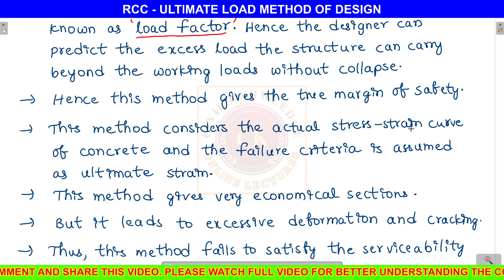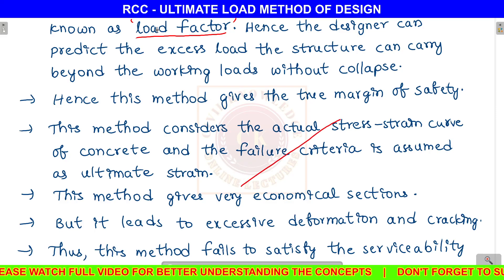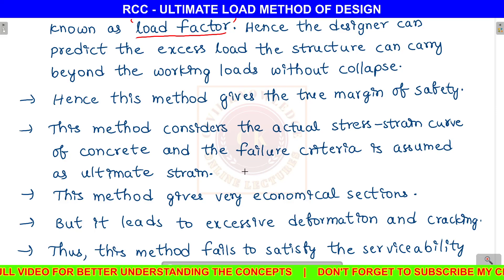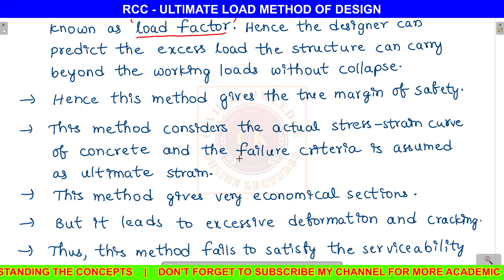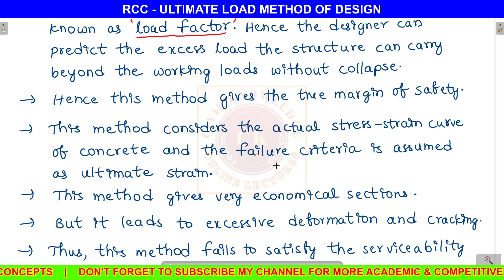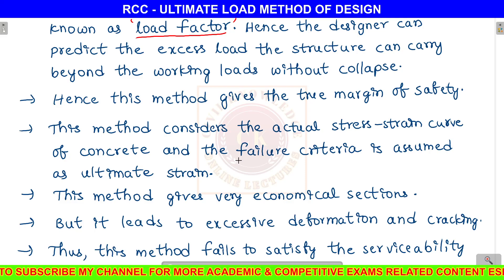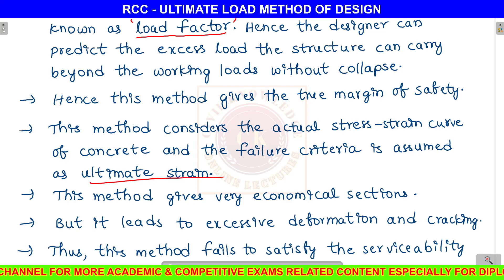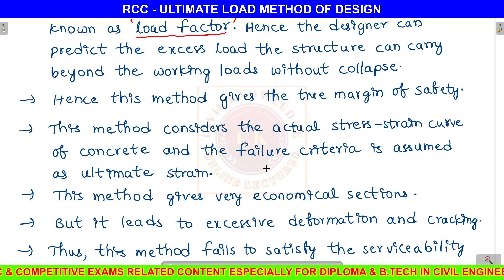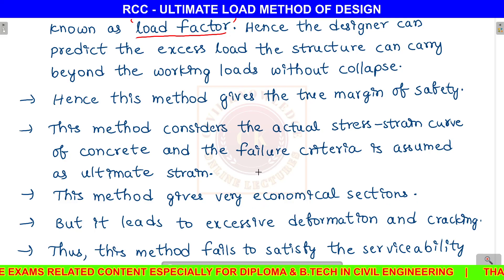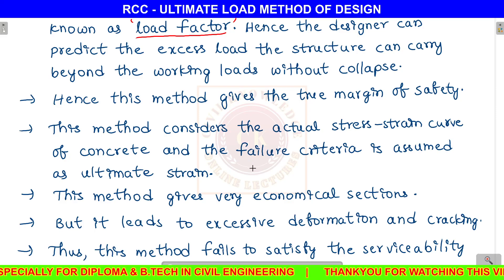This method considers the actual stress-strain curve of concrete, not just a linear stress-strain curve. It shows the actual profile including the failure criteria and ultimate strain. This method gives very economical sections, unlike the working stress method which produces large, uneconomical dimensions of beams, columns, and other structural elements.